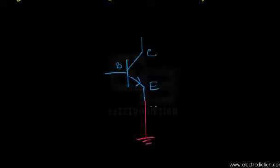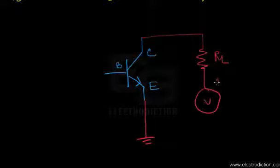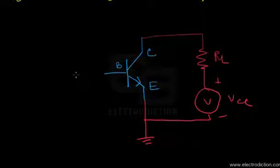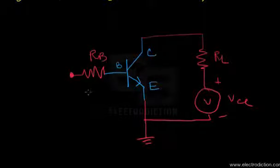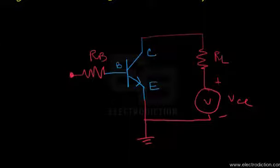Now let's construct a circuit using this BJT in the CE mode. Since it's in CE mode, the emitter terminal is grounded, the collector is connected to a resistance termed RL in series with a source voltage VCC, and there is a base resistance termed RB. Note that in this circuit in CE mode, we do not have any DC bias voltage across the base-emitter terminals.